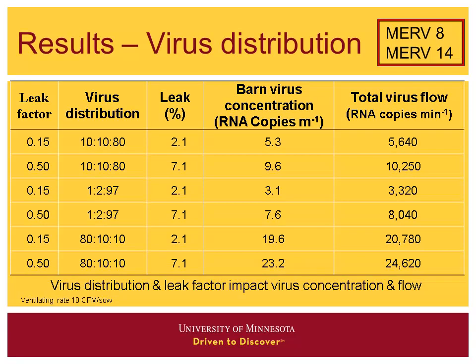Looking at different virus distributions with different filter efficiencies — this case uses MERV 8 plus MERV 14. When we have 80% of virus in the 0.3–1 micron range and we're using a MERV 14, we've got well over 20,000 viruses per minute flowing through, with concentrations around 20. So we've got a lot higher numbers. However, while there may be a lot of virus at that small level, most viruses end up collecting on other particulates, so I'm not convinced that's the best ratio to use.